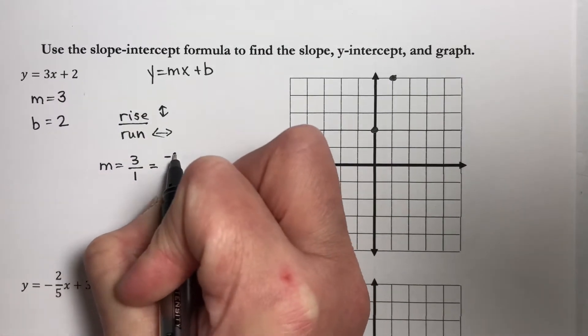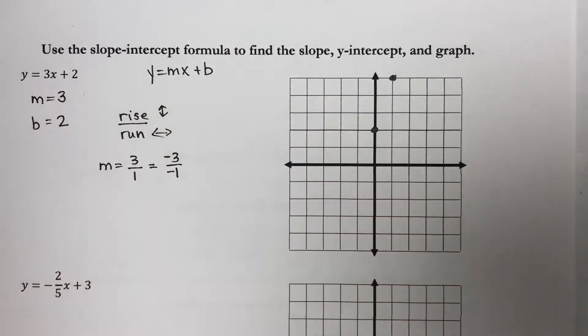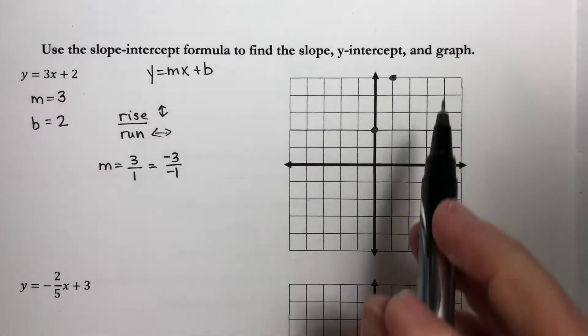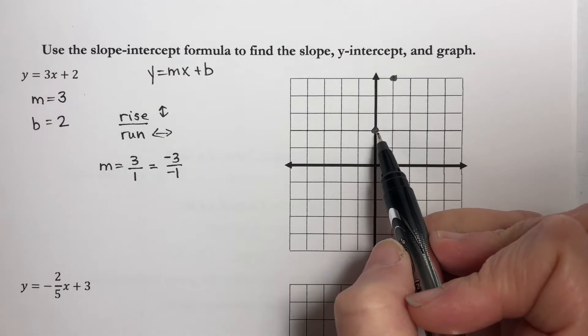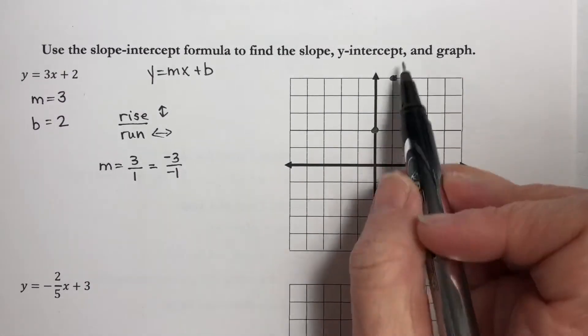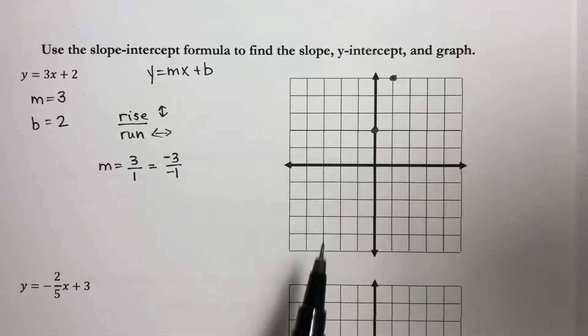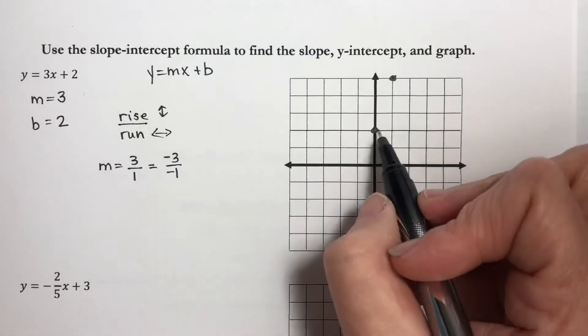This is the same as negative 3 over negative 1, numerically. So I can completely reverse my steps. If I'm too near the edge of a grid, and I can't go as many points as I want to one direction, I can go backwards.